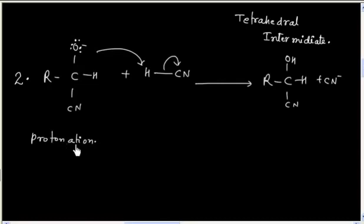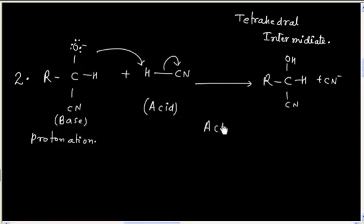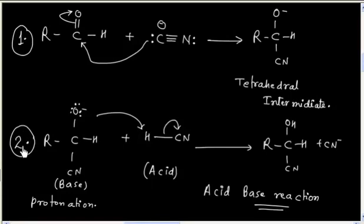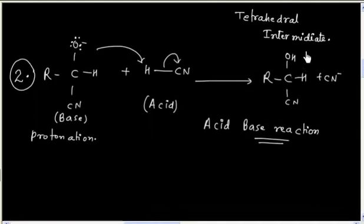The protonation step is basically an acid-base reaction — HCN is acting as the acid and the alkoxide intermediate is acting as a base. So the mechanism contains two steps: in the first step we have nucleophilic attack, in the second step we have protonation, and finally we have cyanohydrin as the product.